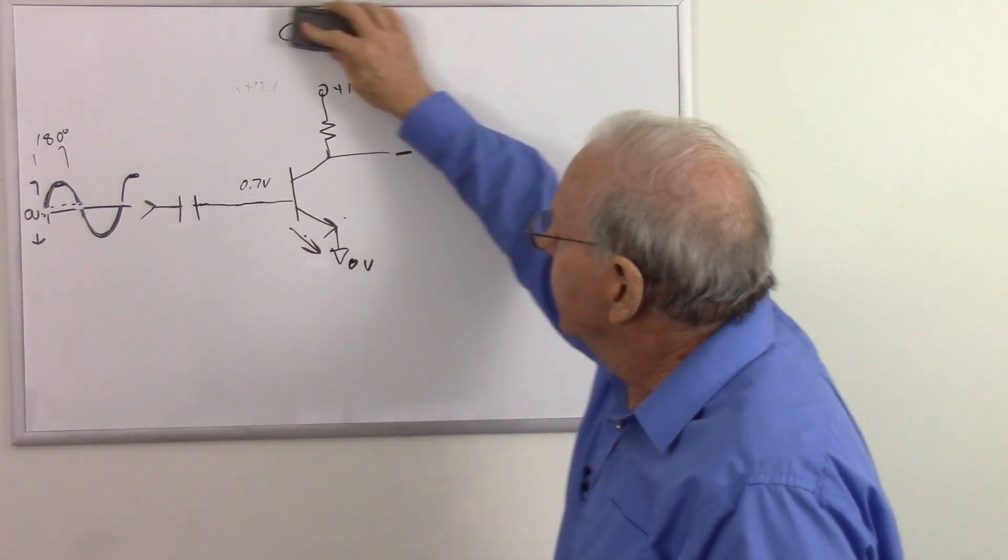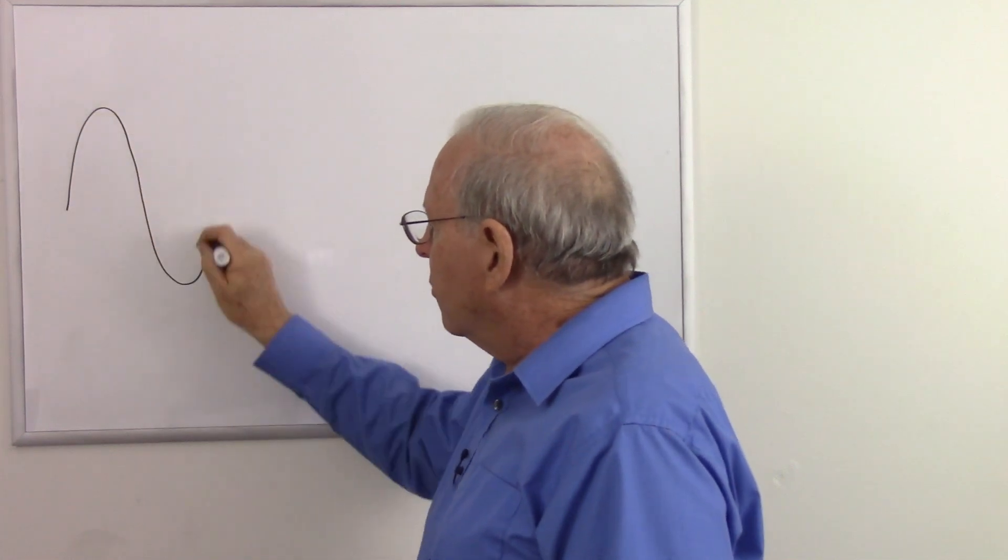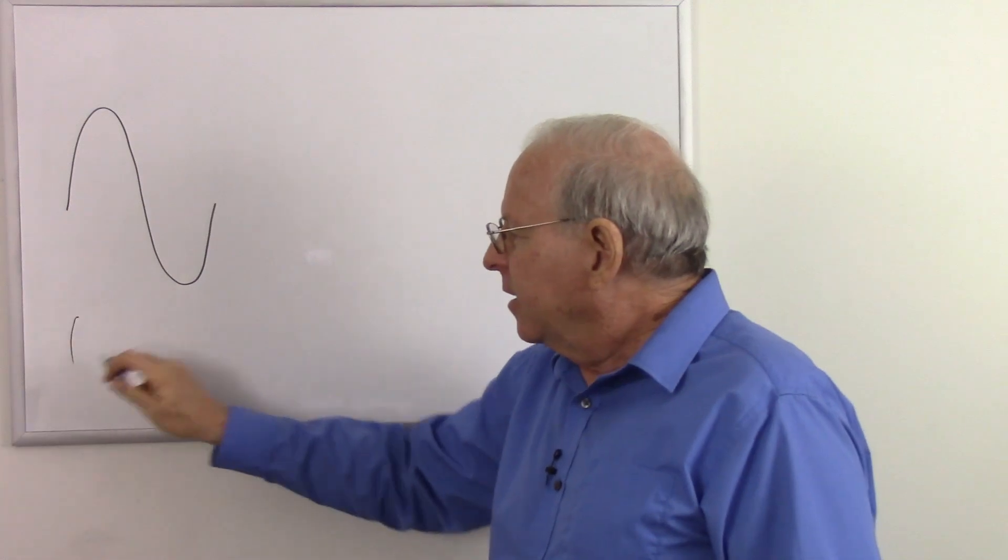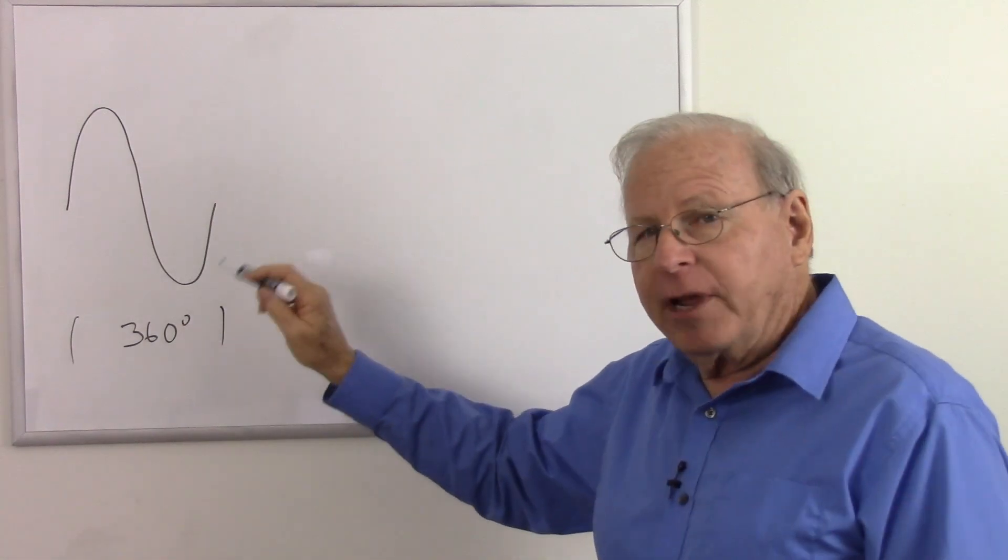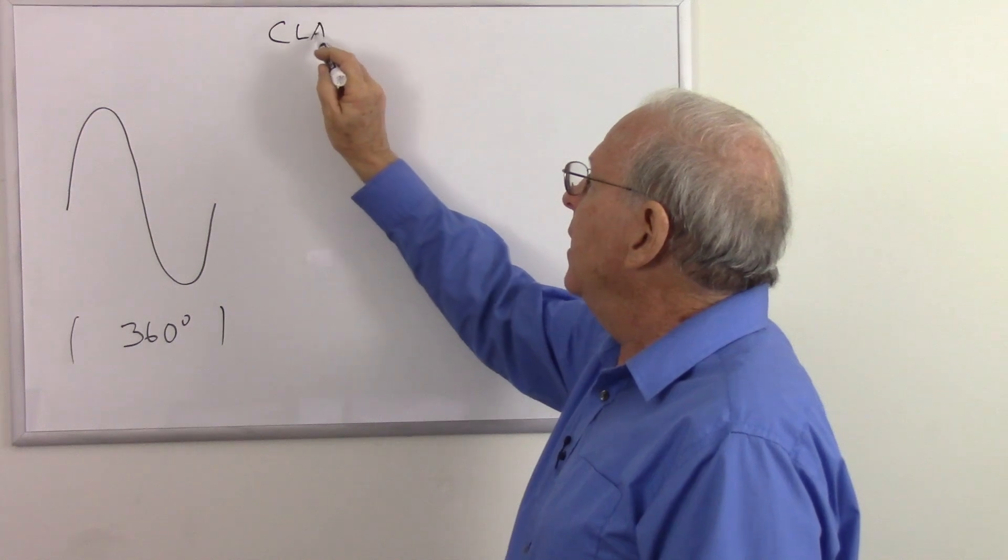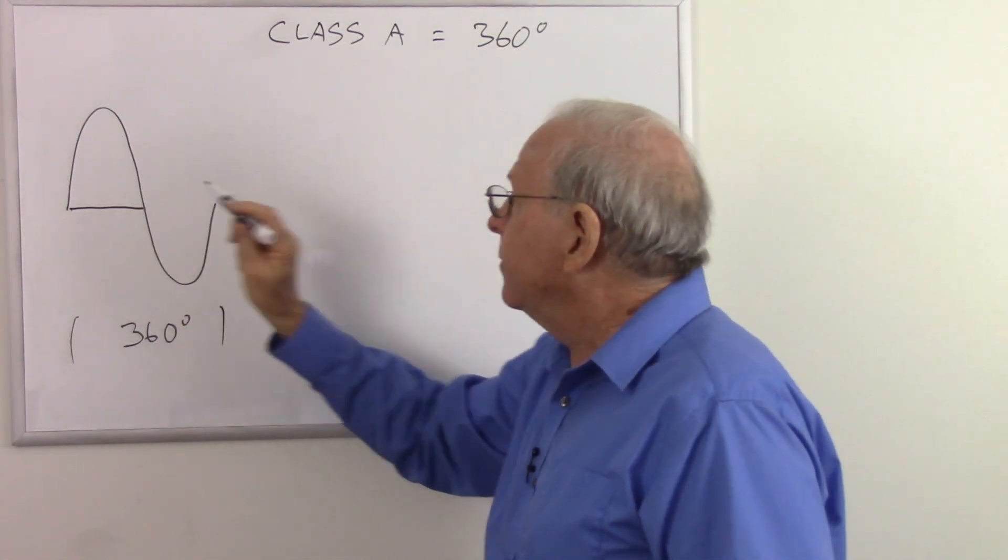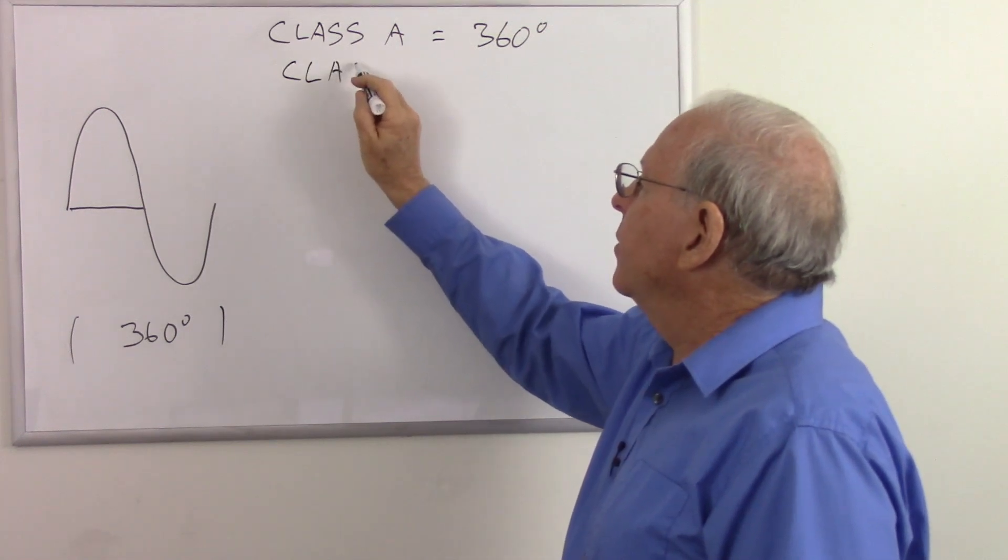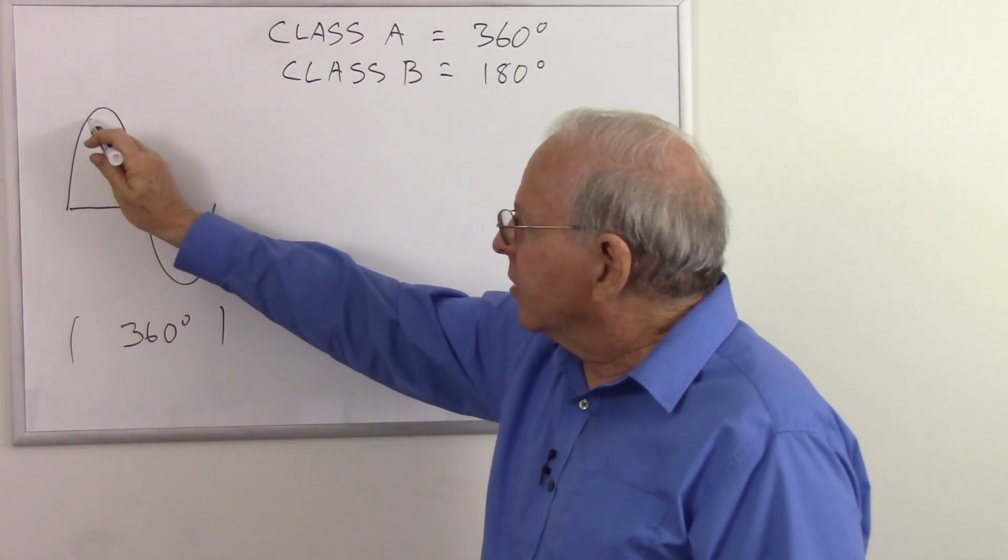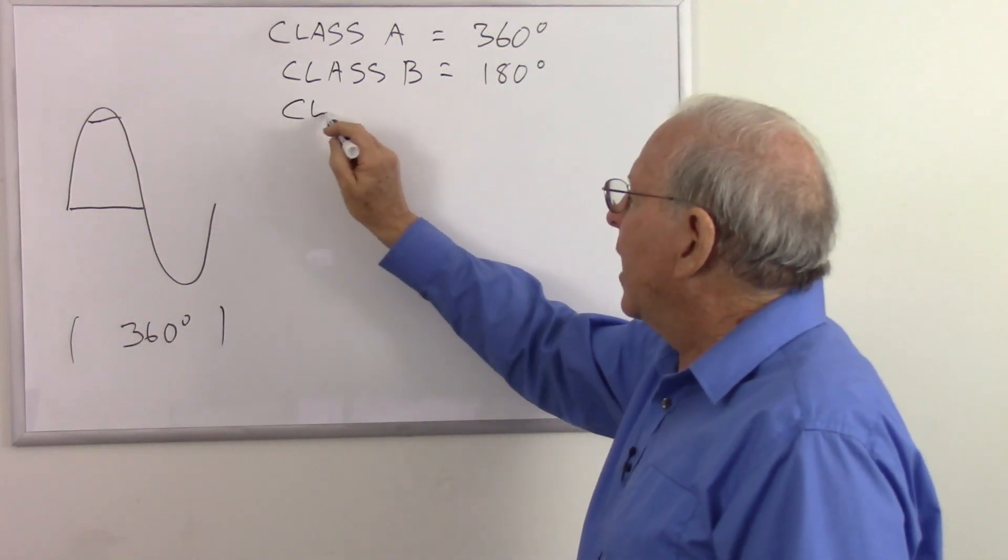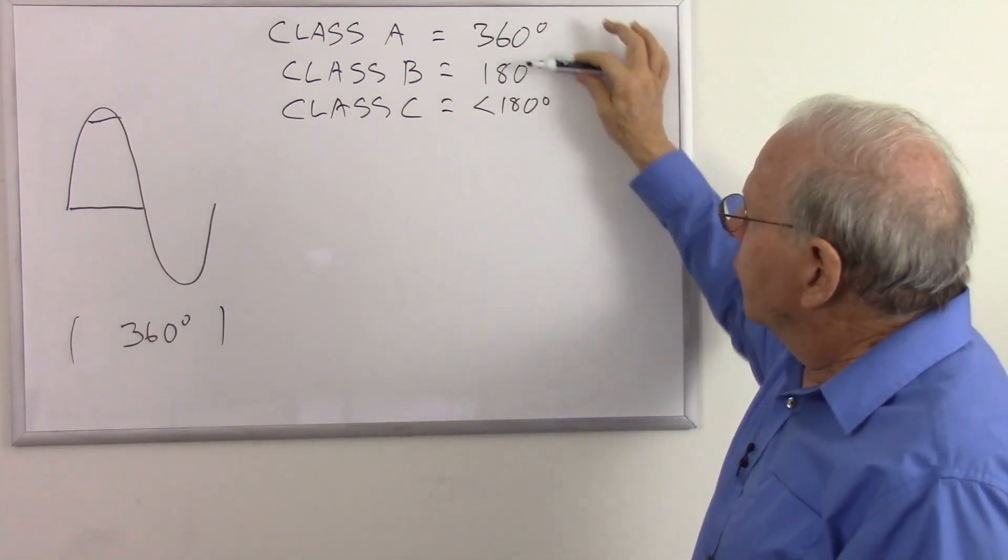Back to our definitions. We have our sine wave that's being amplified. Of course, in the real world, it's a little more complex, but this is just to give an example. That sine wave has 360 degrees total, and it's one cycle. And if we amplify all 360 degrees, we have a Class A amplifier. If we amplify just half of it, we have a Class B amplifier. If we amplify just a tiny bit of it, or anything less than 180 degrees, we have a Class C amplifier. So there's our three main classes of amplifier.